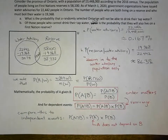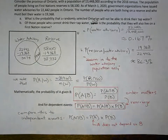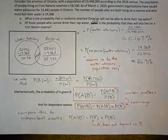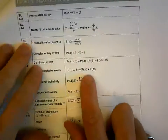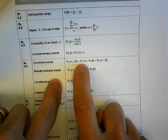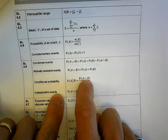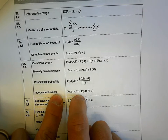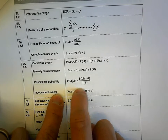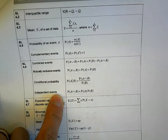I'll show you our formula sheet to verify this is in there. On the formula sheet we have the addition rule, the addition rule for mutually exclusive events, conditional probability, and yesterday's formula for independent events. You don't have to memorize this, but you're going to get very used to writing it out.